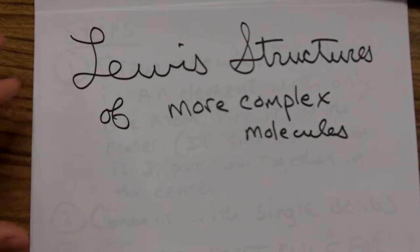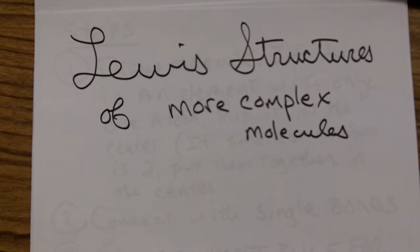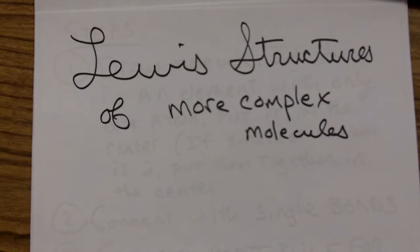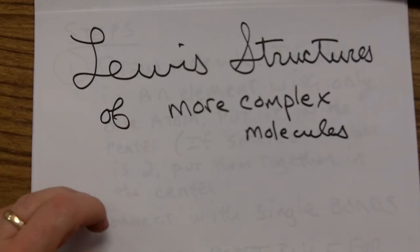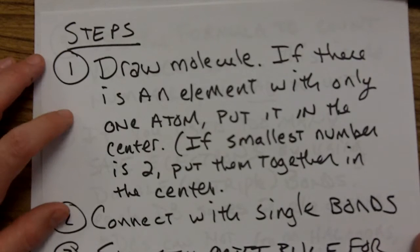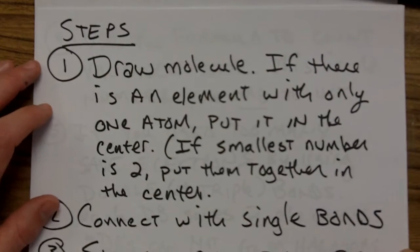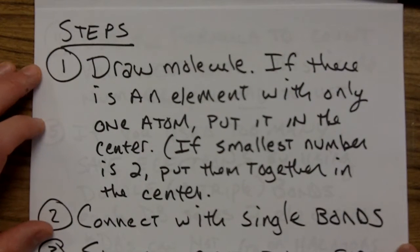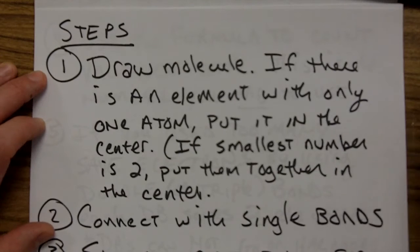Now we will deal with Lewis structures of more complex molecules, and there's a set of rules for dealing with these. They don't make a ton of sense just to sit and read them. You do want to write them down, but mostly we're going to want to work through examples of what these rules mean. So you might pause the video and write all this stuff down, and then we'll go through the examples of the steps.